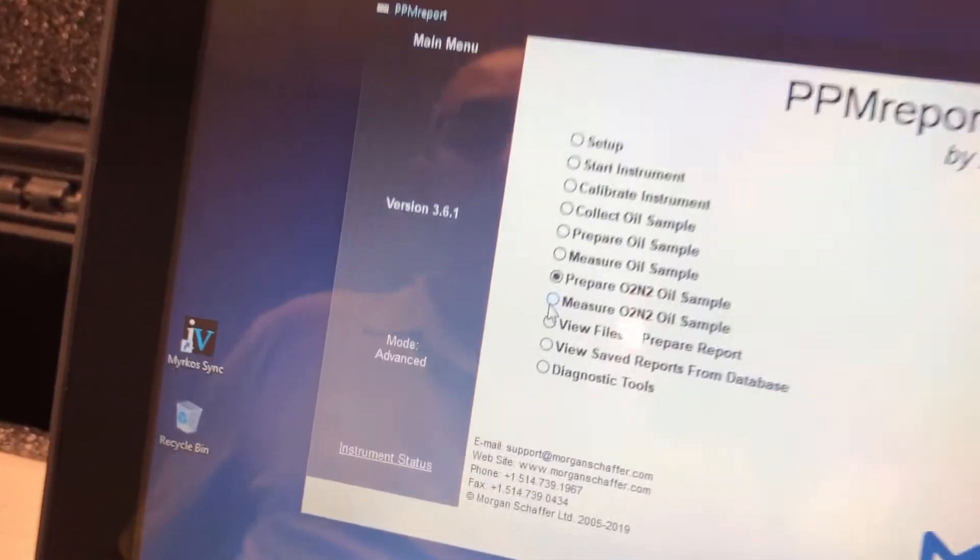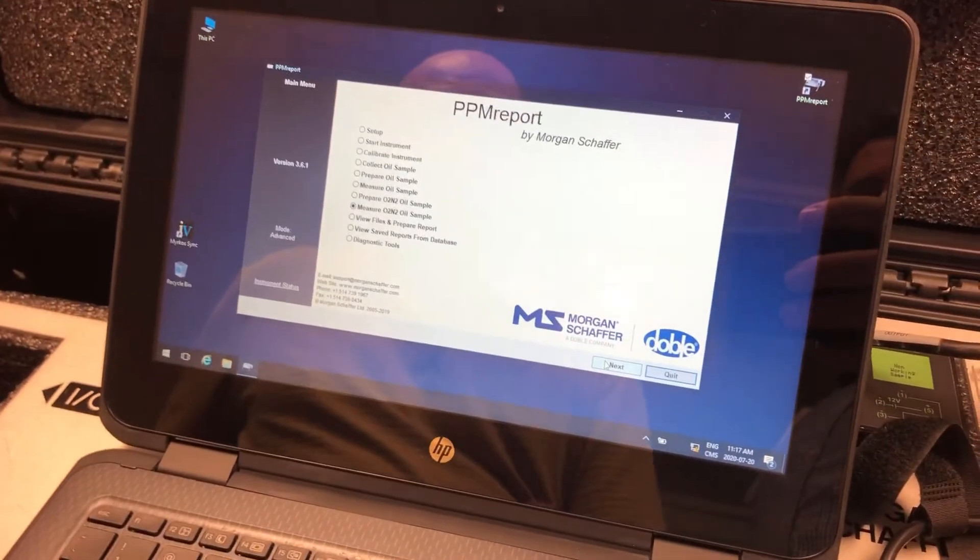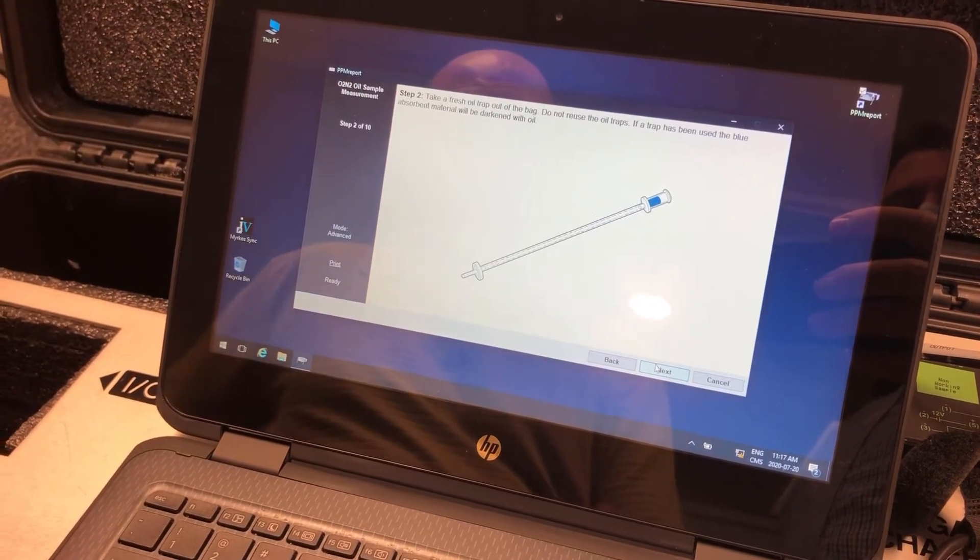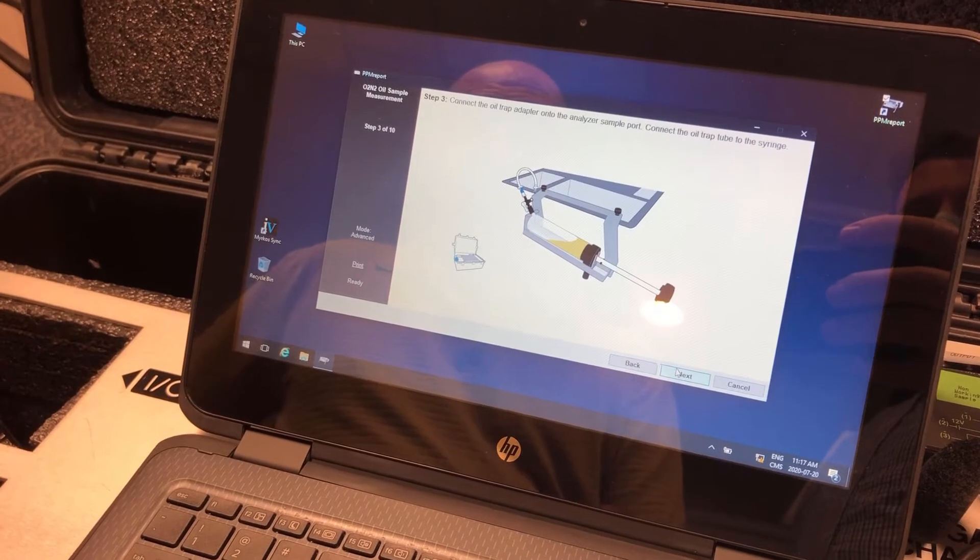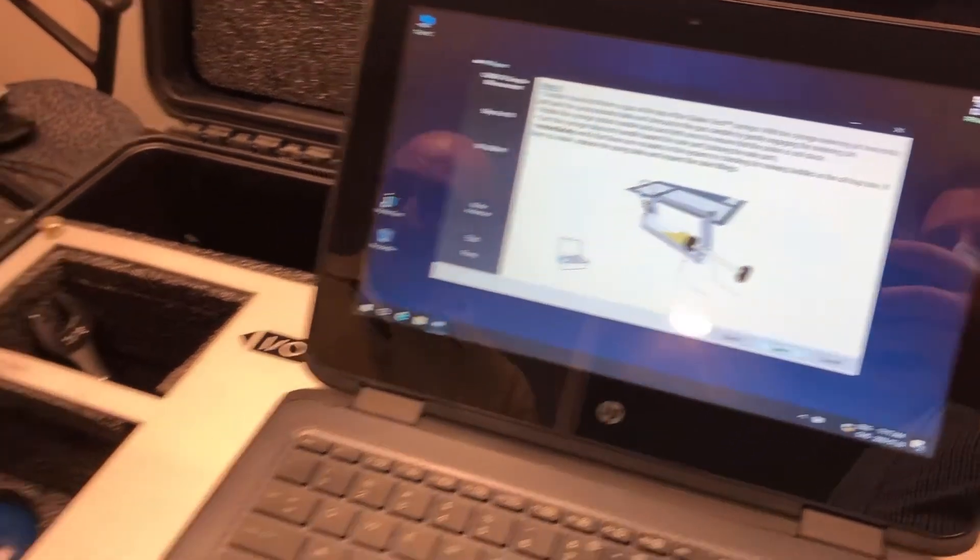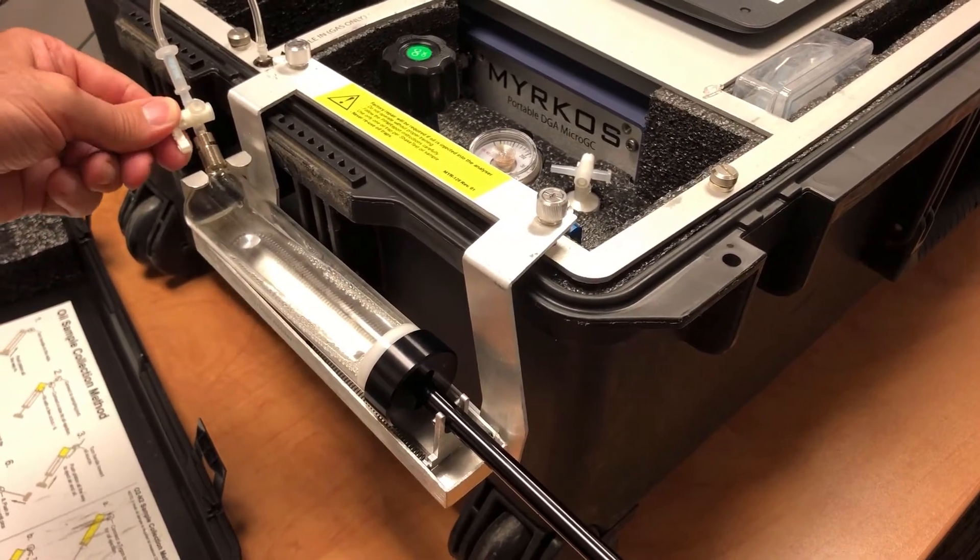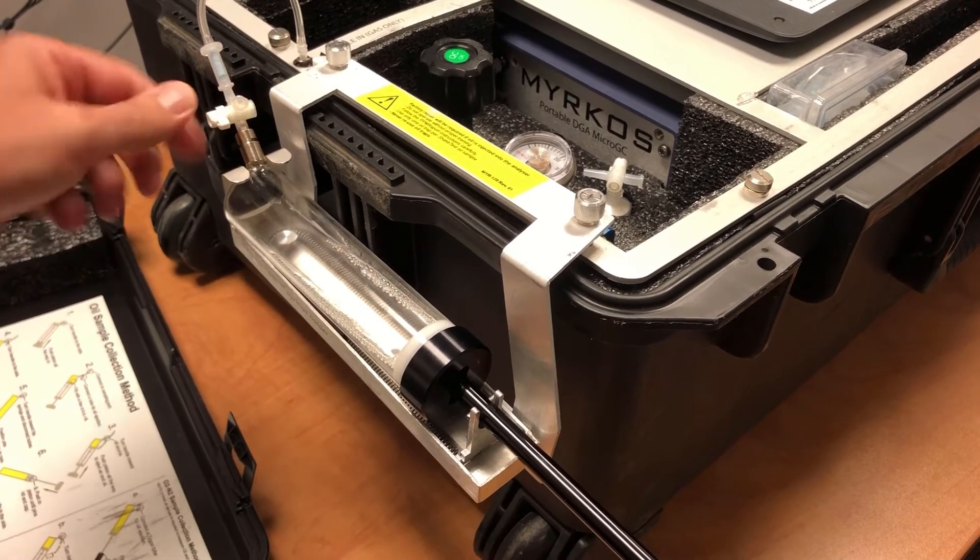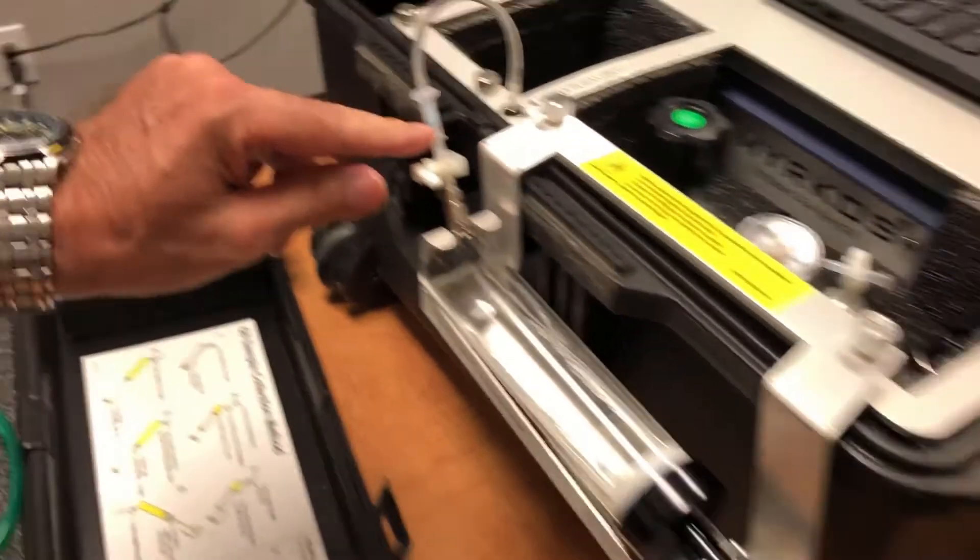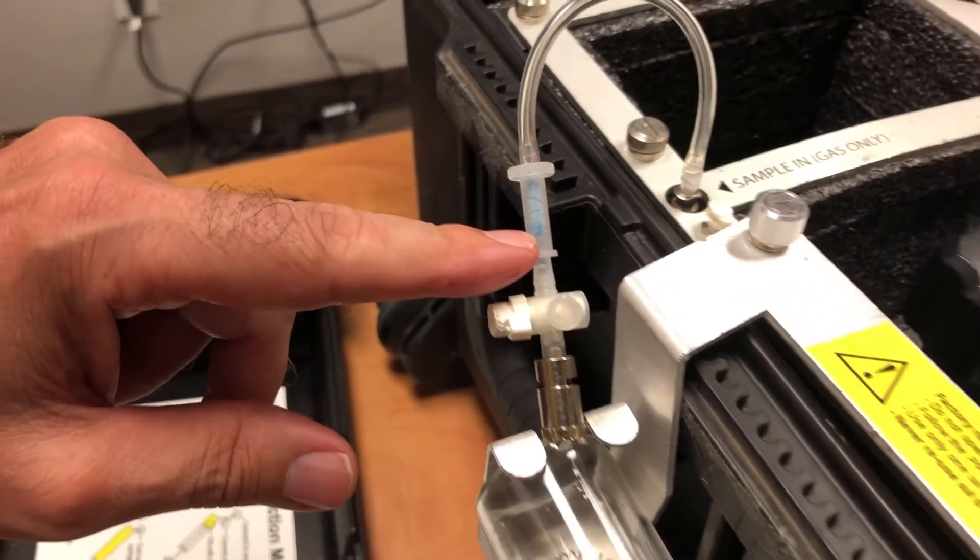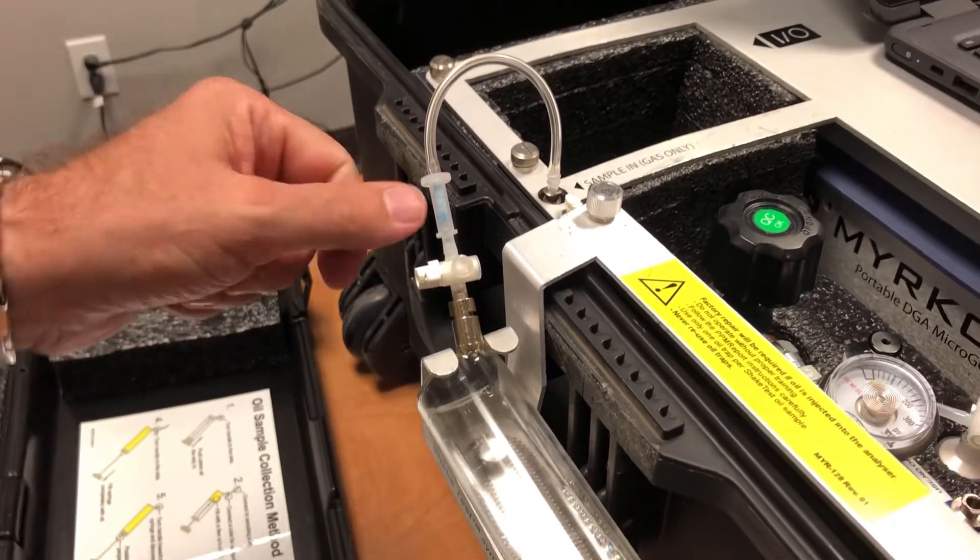So now, we are at the measure of the oxygen-nitrogen. So again, you click next. Use a brand new oil trap. Same thing than before. You put the syringe under pressure. You open slowly the valve to make sure that you see some oil being picked up here by the oil trap. Let's stop it.